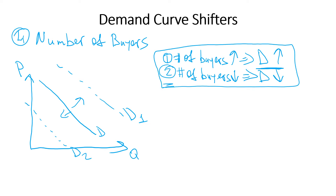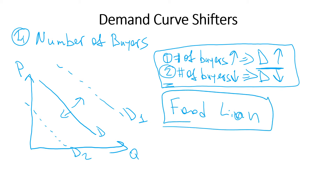Another good example: suppose you're a future business owner looking for a location to open a barbershop in a shopping center. It's important to know if a big retailer like a Food Lion is getting ready to close in that shopping center, because the number of buyers will decrease — and demand for services in your barbershop will decrease as well.